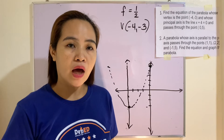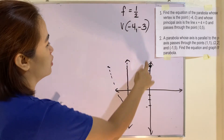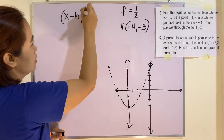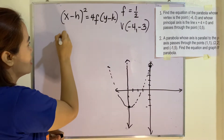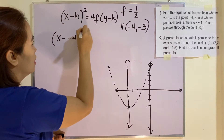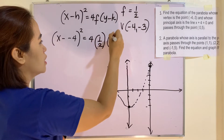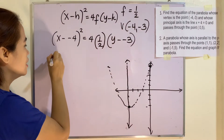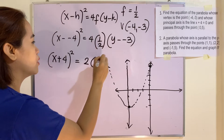We now have f and the vertex. We can find the equation of this parabola that opens upward. The formula is (x - h)² = 4f(y - k). So: (x - (-4))² = 4(1/2)(y - (-3)), which gives (x + 4)² = 2(y + 3).